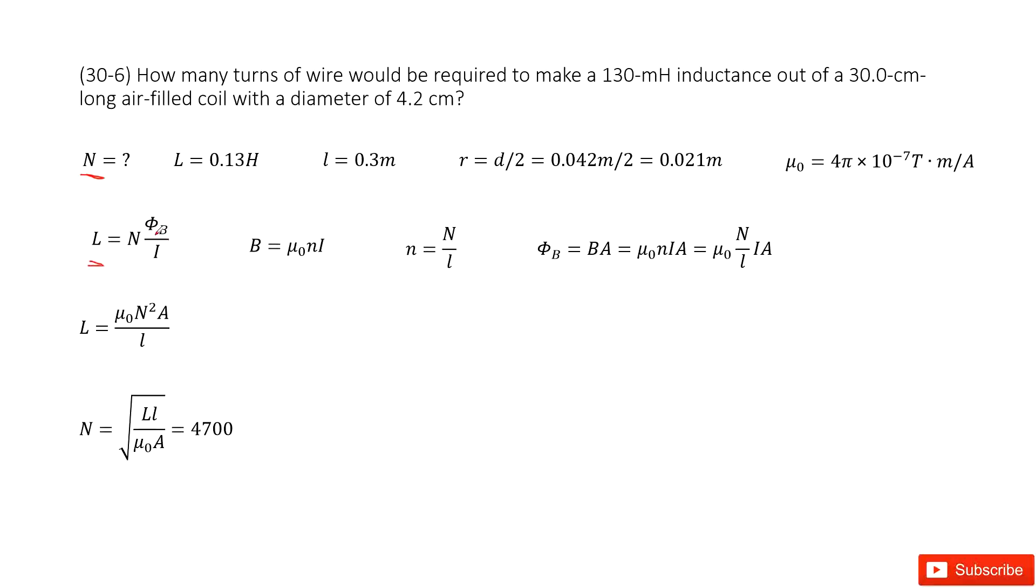And current, we don't know. So it looks like we need to work on the phi B. This is a magnetic flux. It is B times A.